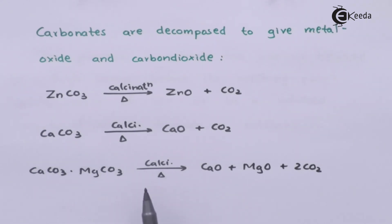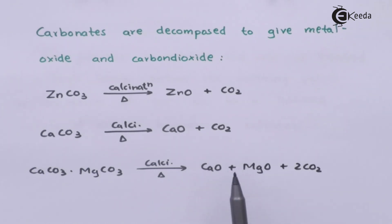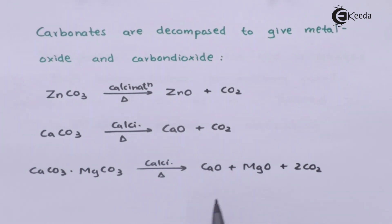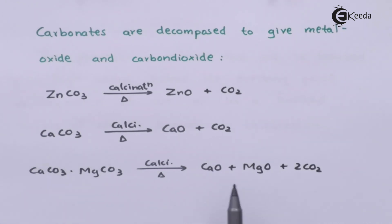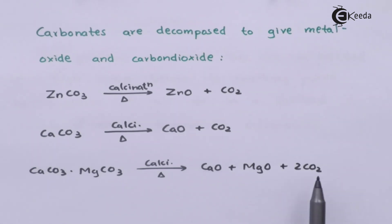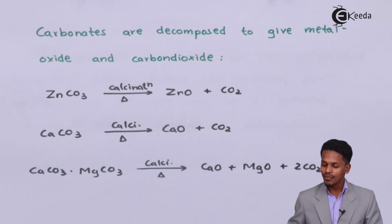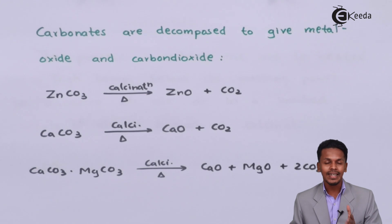For dolomite, that is CaCO₃·MgCO₃, when it undergoes calcination, the products obtained are CaO and MgO, thereby converting the carbonates into the corresponding metal oxides along with two moles of CO₂ being eliminated.